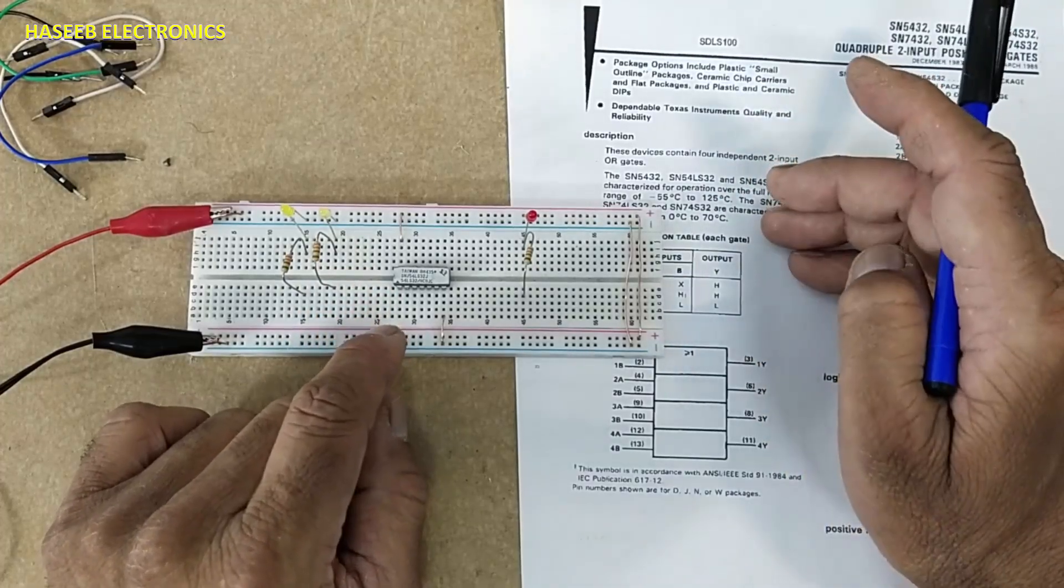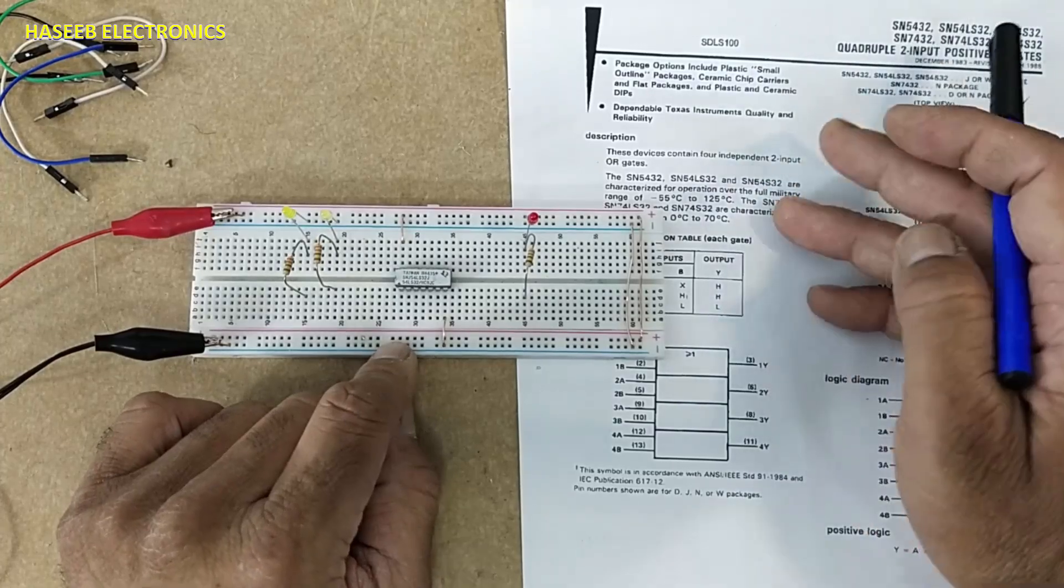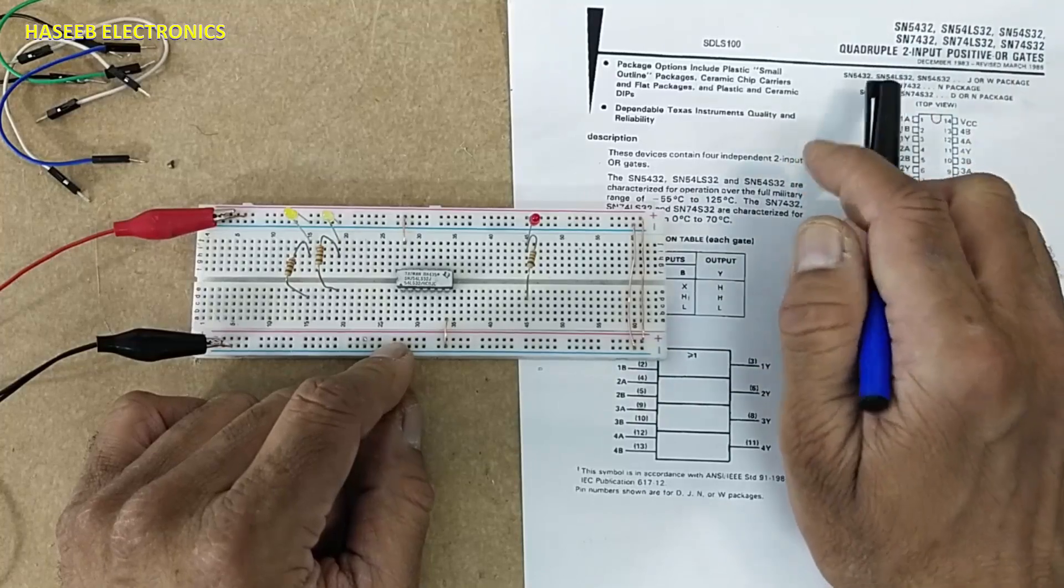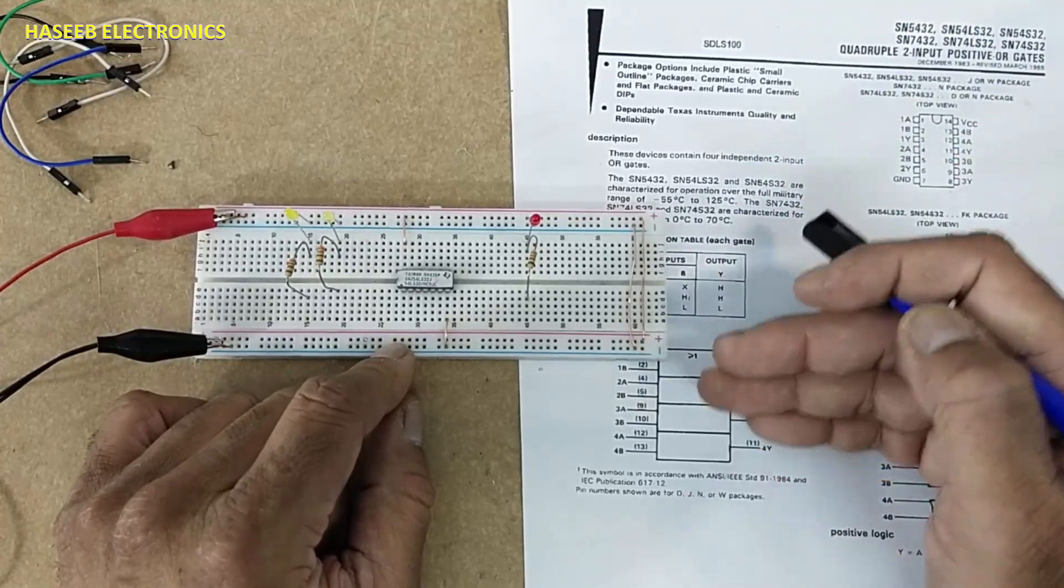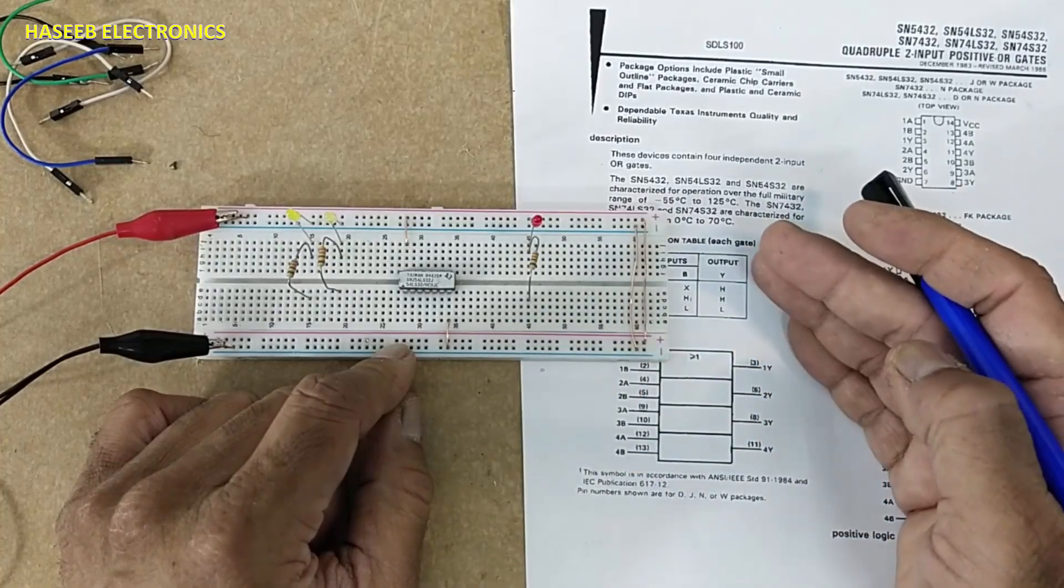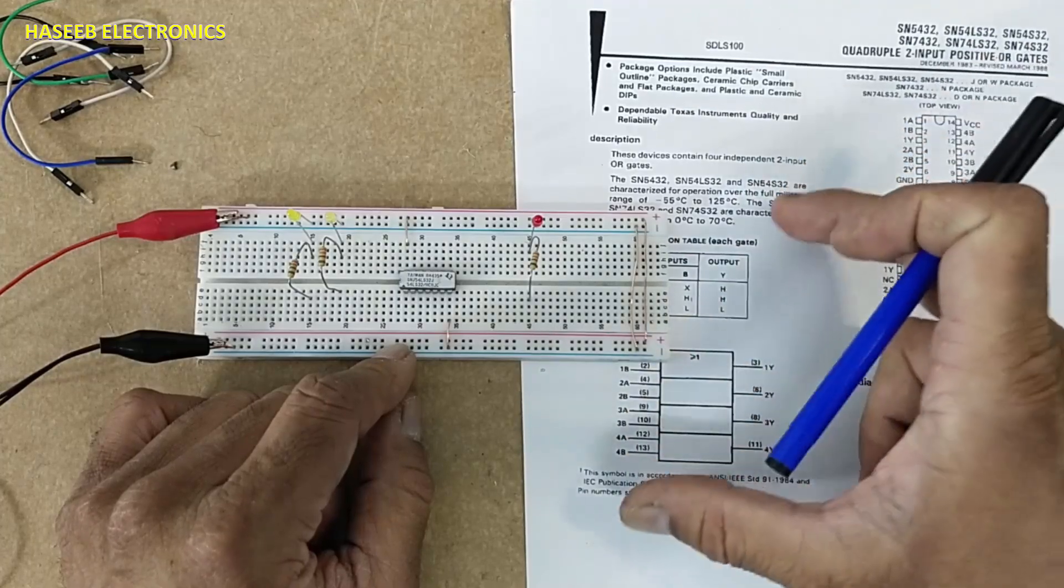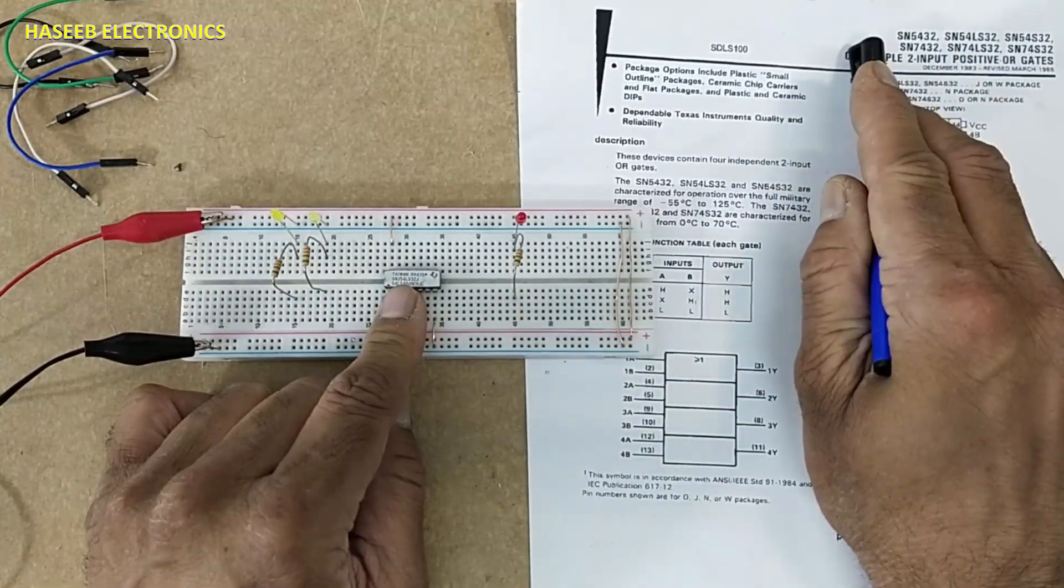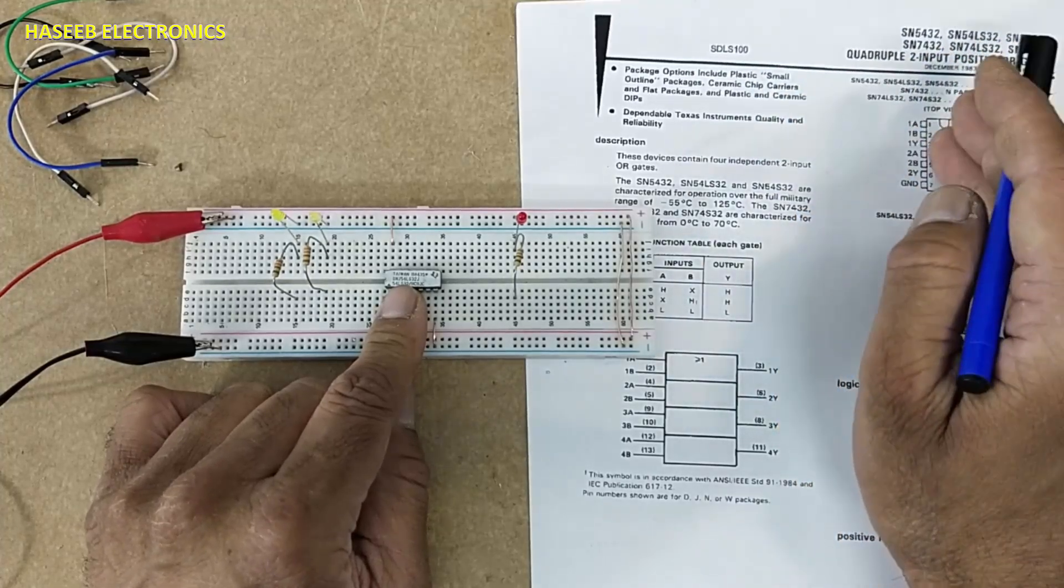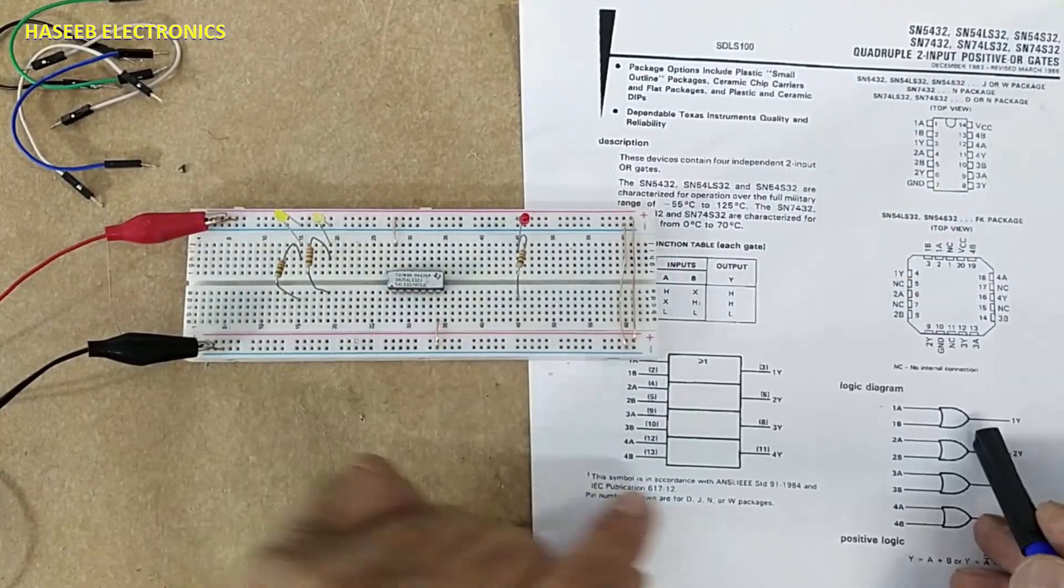74 is commercial and 54 is industrial and military specification. Number 54 works in minus 55 to 125 degree temperature and 74 works from 0 to 70 degree. Working voltage is 5 volt nominal from 4.75 to 5.25, this is working window. 32 with any prefix 54 or 74 LS, RS, HC, HCT, these are OR gate logic.